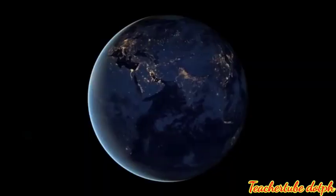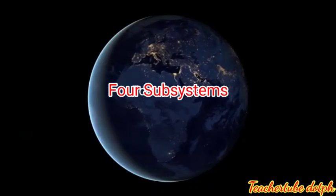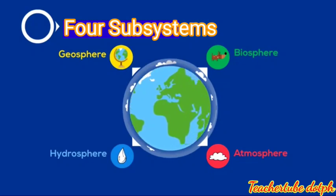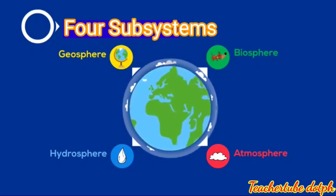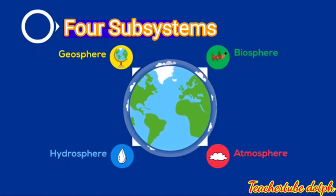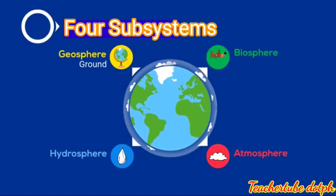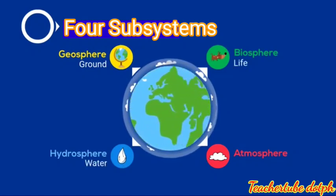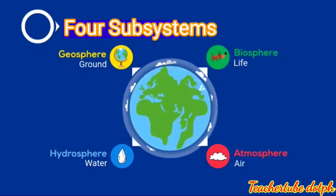Today, we're going to talk about subsystems of Earth. There are four subsystems: the geosphere, from the Latin word 'geo' meaning ground; the biosphere, from 'bio' meaning life; the hydrosphere, from 'hydro' meaning water; and the atmosphere, from 'atmo' meaning air.